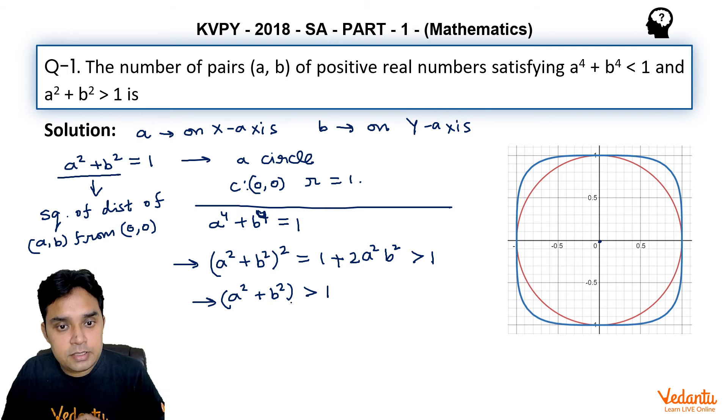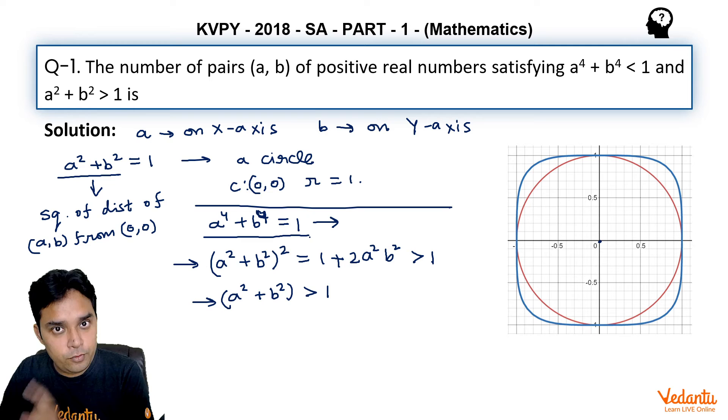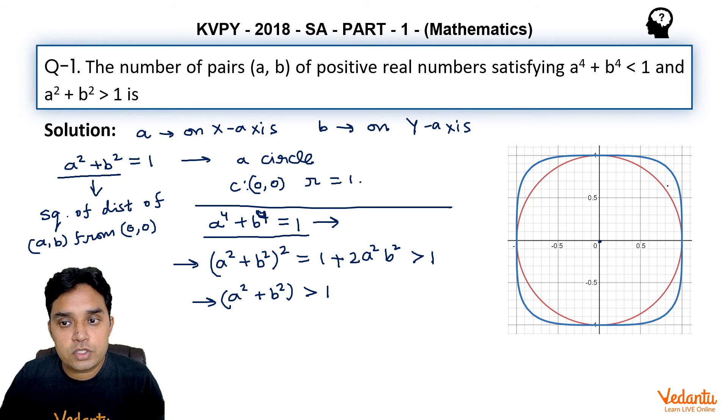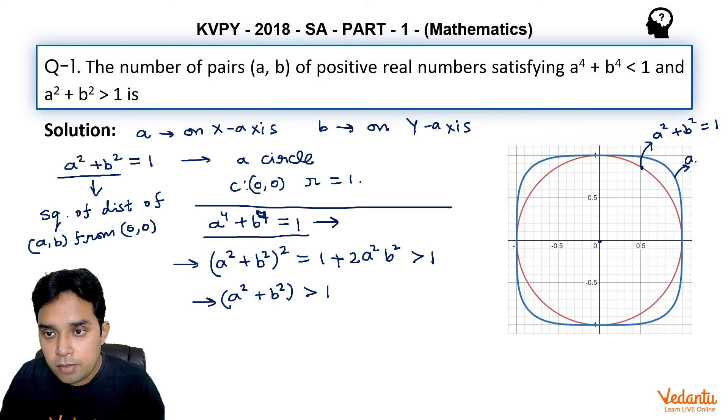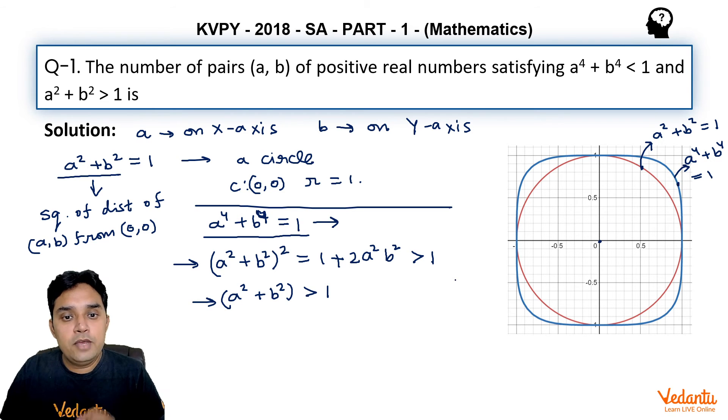Which means those points satisfying a⁴+b⁴=1 will be having distance from origin greater than 1. That means this graph should be lying outside this circle. Here the orange color is circle a²+b²=1 and the blue color is the graph of a⁴+b⁴=1. We have proved that for any point on a⁴+b⁴=1, the distance from origin will be greater than 1.